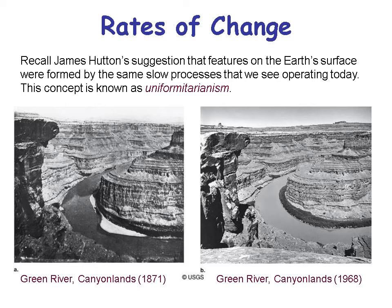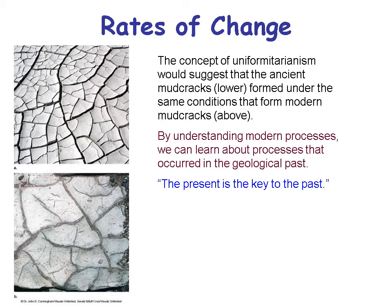There's a concept known as uniformitarianism that says the processes we see now are the same kinds of processes that took place in the past. If we take pictures of the Green River a hundred years apart, we don't see a lot of change — the sandbanks may change, but the rock formations haven't changed much. Earth's surface changes slowly in most cases. Uniformitarianism suggests ancient mud cracks formed the same way we get mud cracks today, so we can study modern processes and learn about the past.